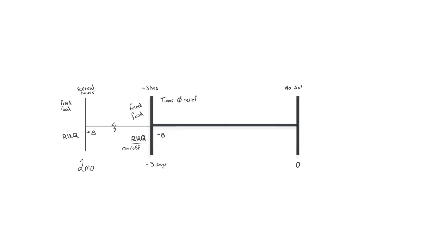A single vertical line represents a point in time. Then we have another vertical line representing another point in time. This is a very simplified example of taking notes using the H in HPI method. We'll get back to this.